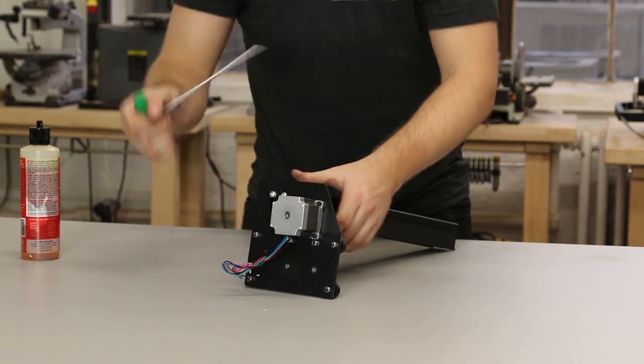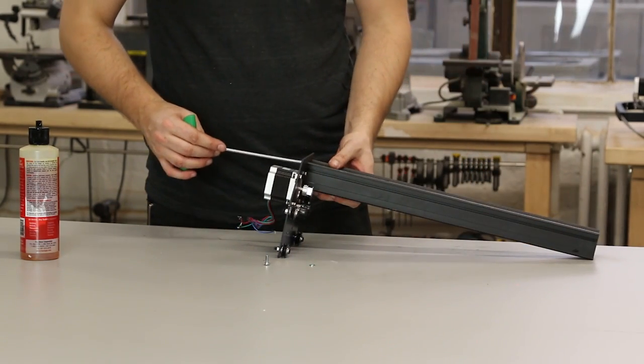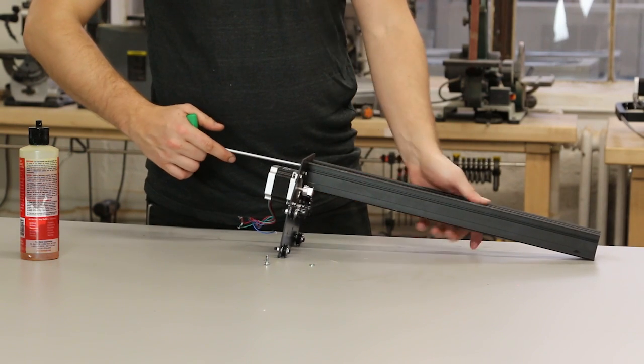You can leave this screw a little loose so that you can line up the last screw to tap into this second piece of maker slide.